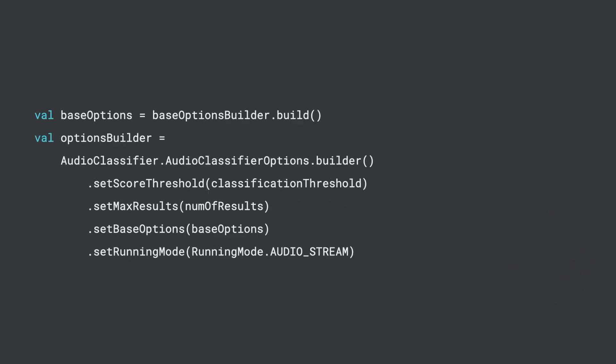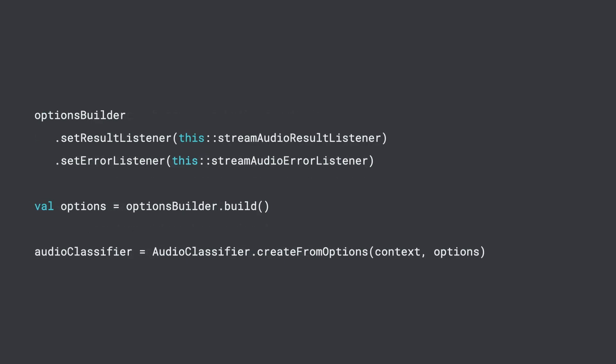Following that, you can create the classifier-specific options, which are where you will set the minimum acceptable score threshold that must be passed before a result is returned to the rest of the app, the max number of results that you can expect back, and the running mode. In this example, you will learn about live streaming classification, though you can also accept an audio file from the user's device. And since live stream classification happens asynchronously, you will need to associate a set of listeners with the builder before creating the final options and classifier object.